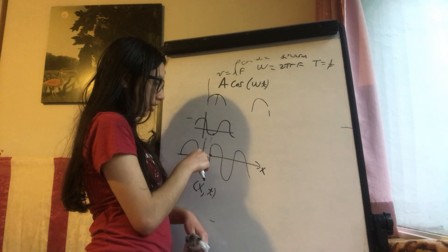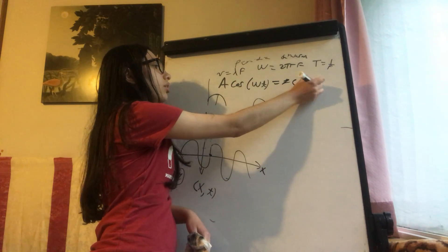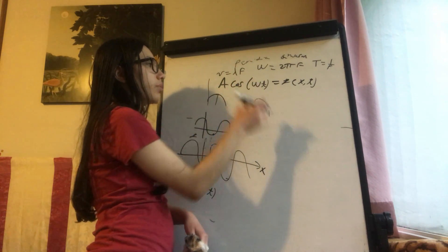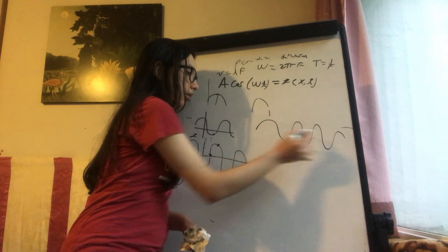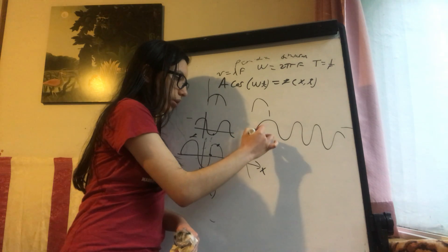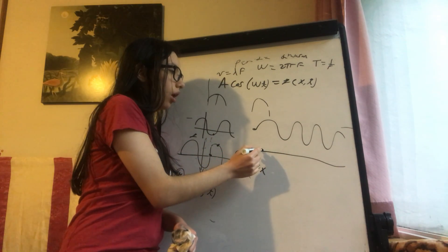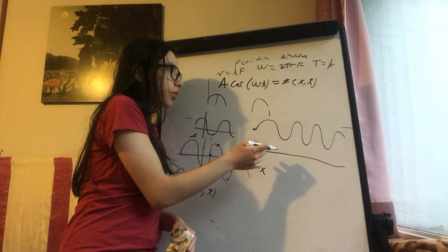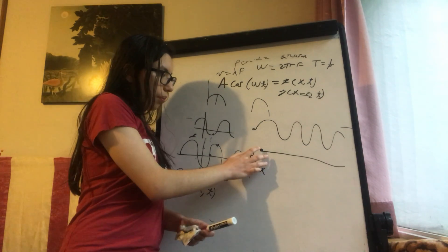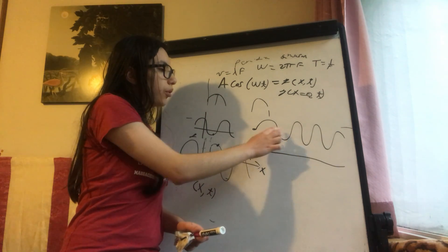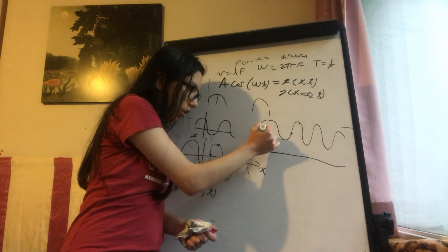Now, here we have a particle at the beginning — let's say this is the straight rope, and we have a particle here. Because this particle is at the initial position, we have x equals 0. So we are talking about y(x=0, t). This point would have exactly the same y-value as the corresponding point — always. When this is a crest, the corresponding point would be a crest; when this is a trough, the corresponding point would be a trough.